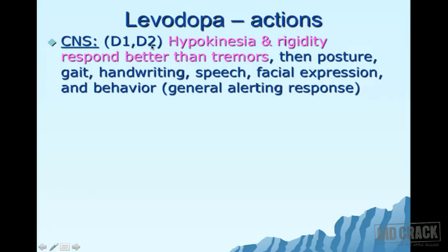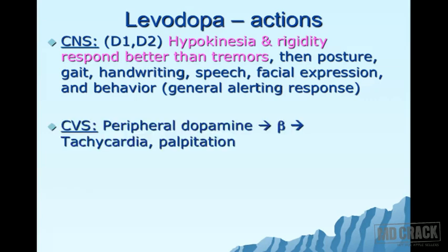Levodopa acts on D1 and D2 receptors. Of all Parkinson's symptoms, levodopa produces the best response for hypokinesia and rigidity, as these respond better than tremors. Tremors are mainly due to cholinergic excess. Posture, gait, handwriting, speech, and facial expression also improve, along with a general alerting behavioral response.